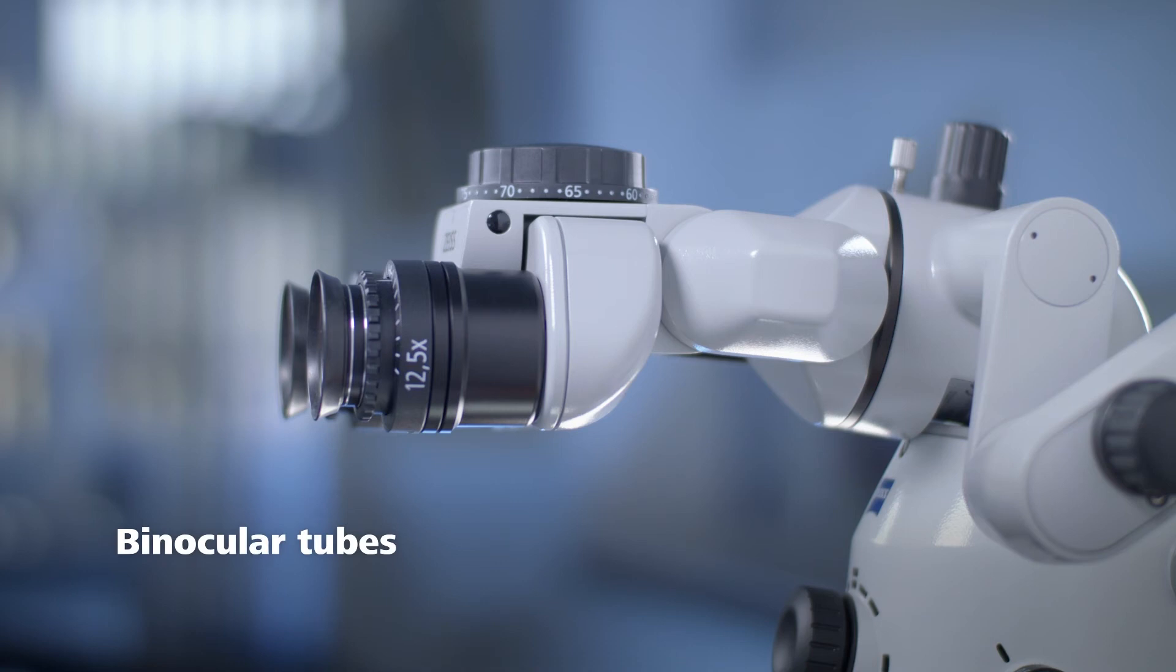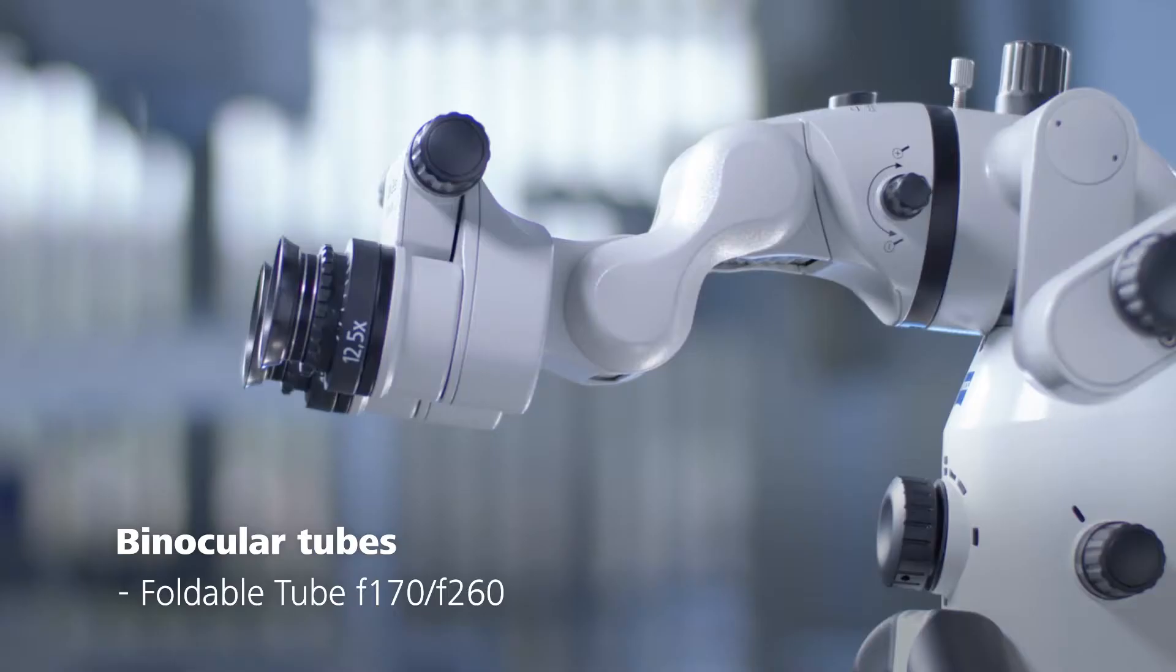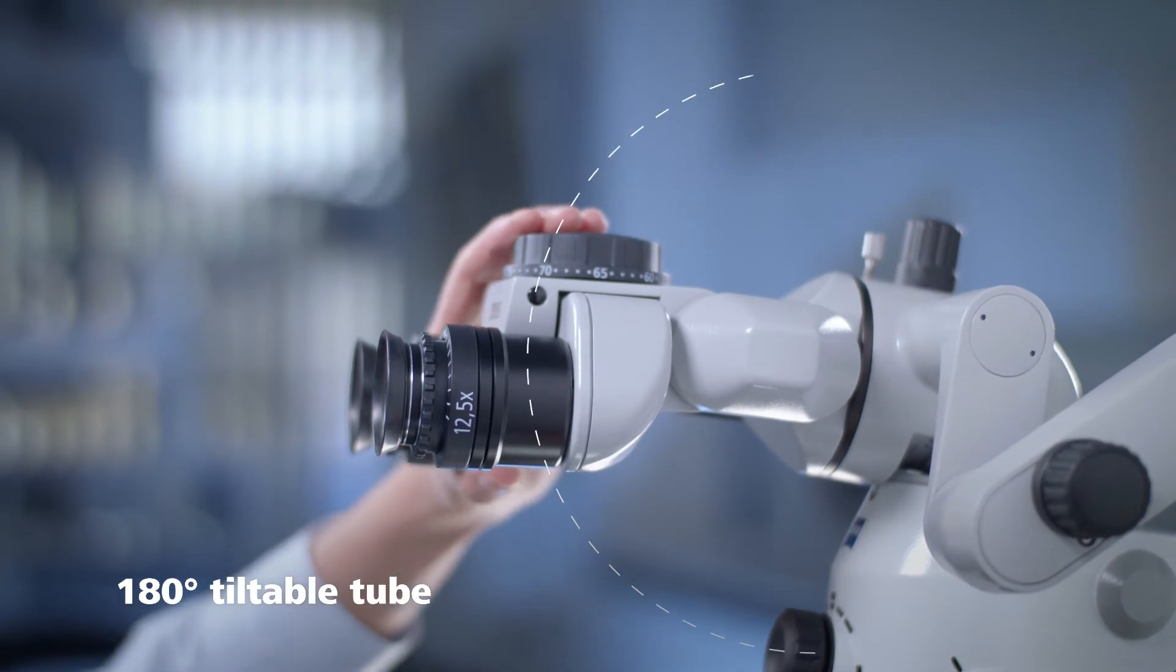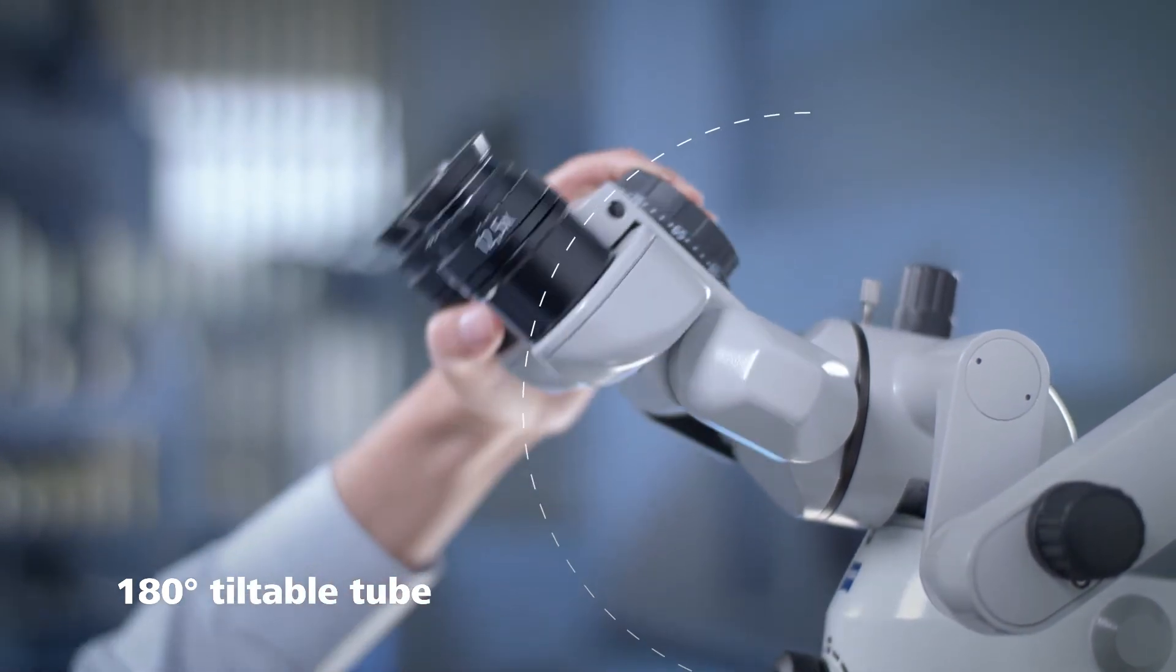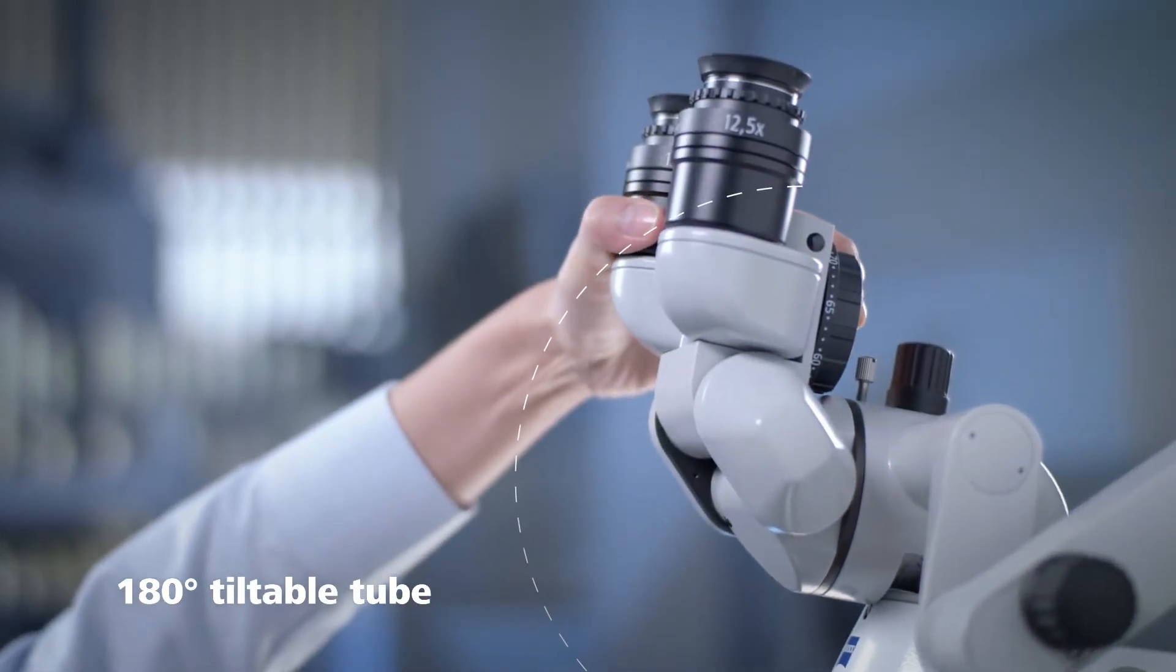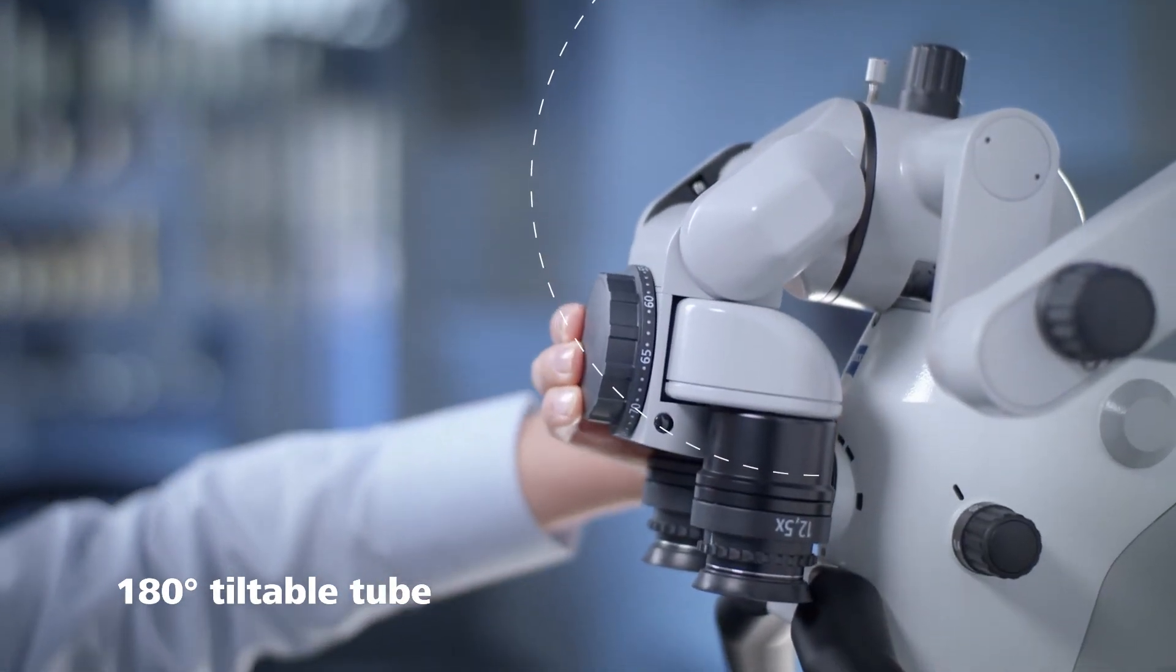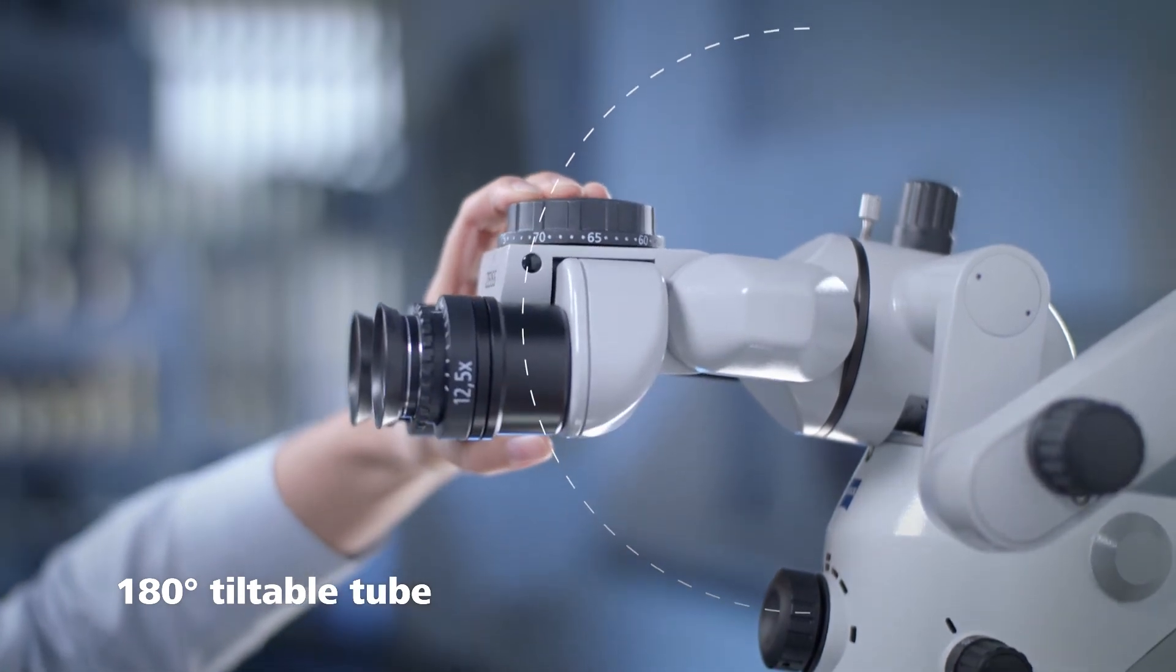Zeiss offers two binocular tubes: a 180 degree tiltable tube and a foldable tube F170-F260. Your choice of binocular tube depends on your needs and preference. The 180 degree tiltable tube enables you to adjust the eyepieces for a relaxed and ergonomic working posture by tilting it at any angle between 0 and 180 degrees.